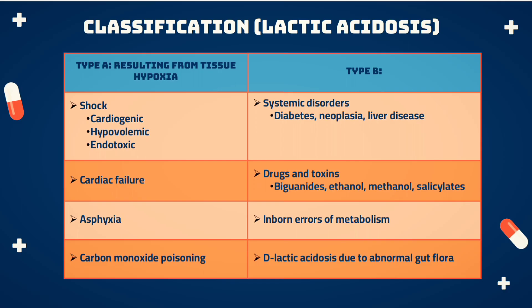Let's see the classification of lactic acidosis. This condition can be classified according to its etiology into two categories: Type A and Type B.